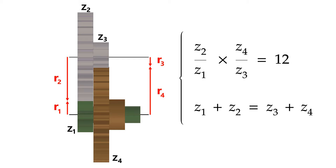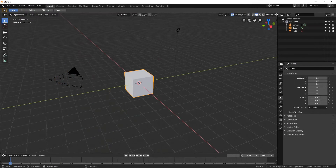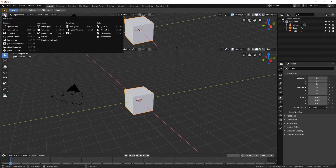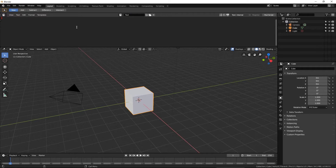To solve this system of equations, we will write a simple Python script and execute it in Blender. The script will iterate through all possible combinations of teeth in the range 8 to 50, and display the combinations that fit our two conditions. In Blender, open a new window, choose Text Editor for the window type, press New, and type the following script, which can also be found in the video description.